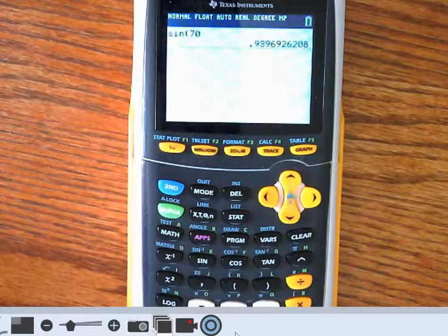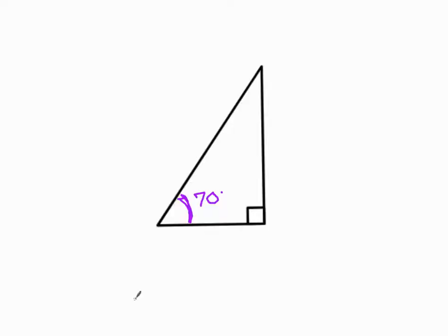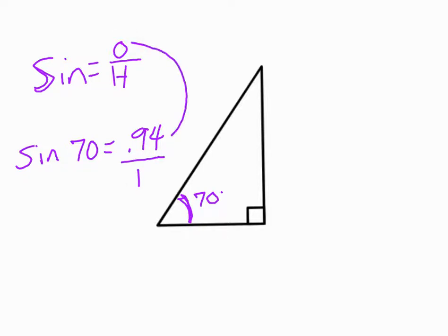What this is saying is that back on this drawing, if you remember that sine is opposite over hypotenuse. Okay, that's part of SOHCAHTOA. So when we get this answer, sine of 70 equals 0.94, if we make that decimal look like a fraction by putting it over 1, then we can kind of see that the opposite side would be 0.94 and the hypotenuse would be 1. So in this diagram, opposite the 70 degree angle would be 0.94 and the hypotenuse would be 1.